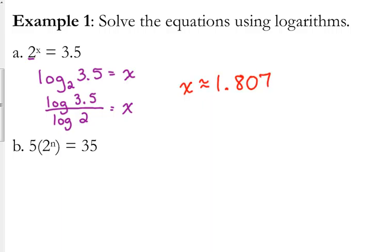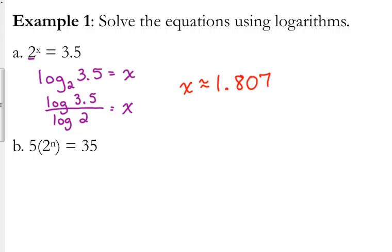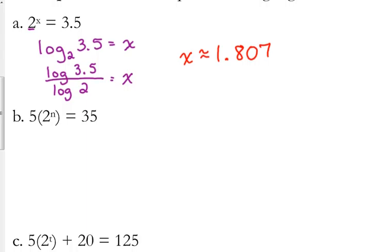And you can check it. Go back to the original, see if 2 raised to that power is equal to 3.5. Well, don't round. Just do 2, the little exponent button, and press 2nd negative, and you should get 3.5 if you type it in the log. So 2 to the 1.807 power is 3.5.